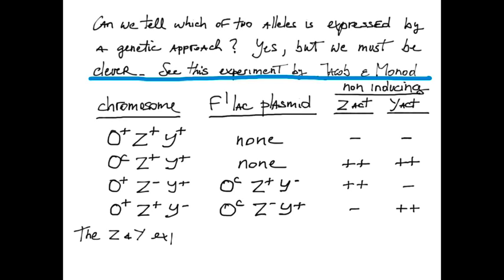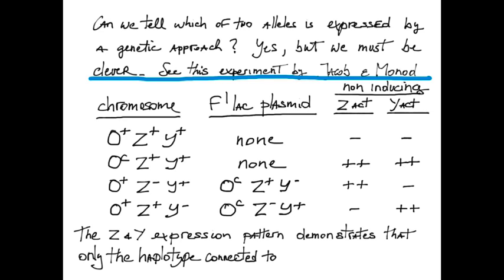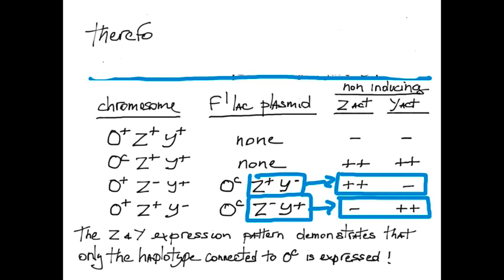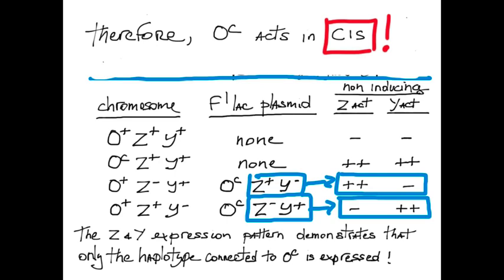The Z and Y expression pattern demonstrates that only the haplotype connected to OC is expressed. In other words, they could differentiate clearly between haplotypes. Therefore, they concluded OC acts in cis.